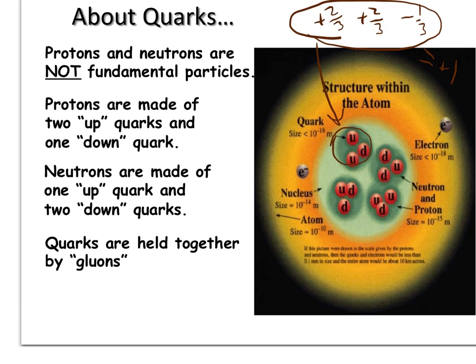Neutrons are made up of one up quark and two down quarks. So, here would be a neutron. Obviously, if you have two down quarks, each down quark has a negative one-third charge and an up quark has a positive two-thirds charge. If you add that all up, it comes out to be zero, which is the charge of a neutron.